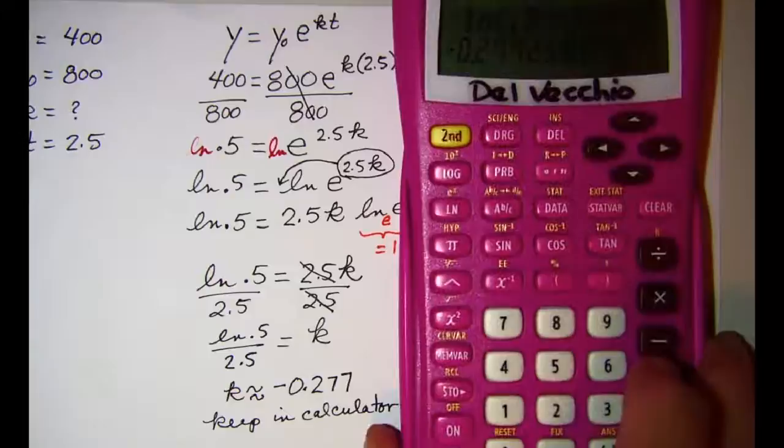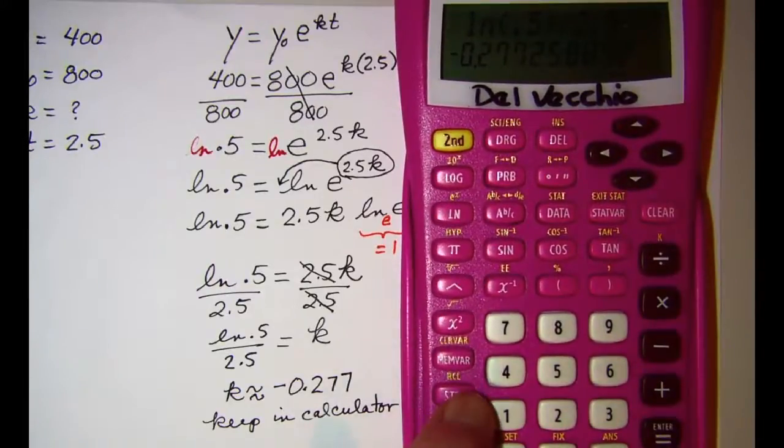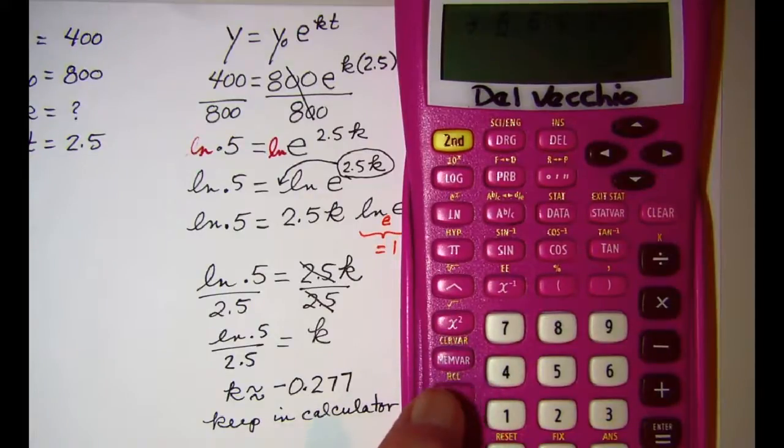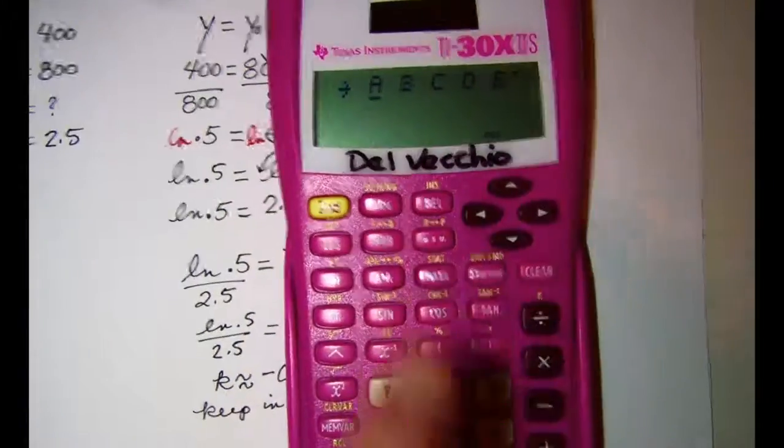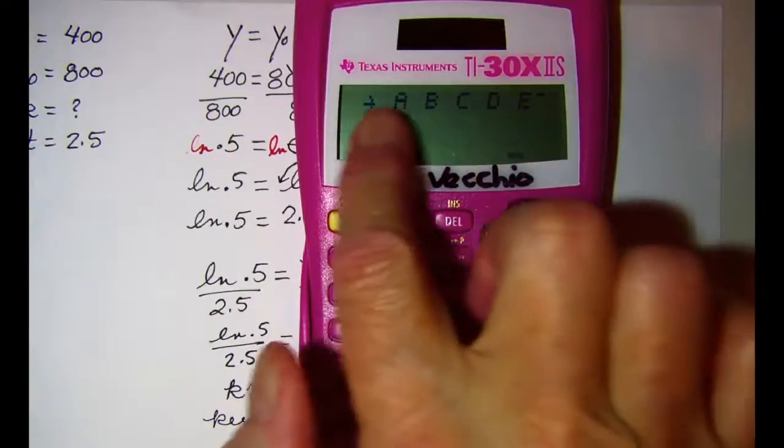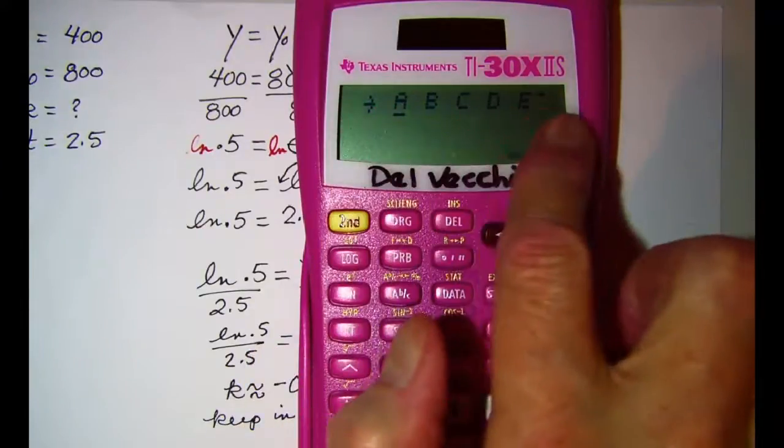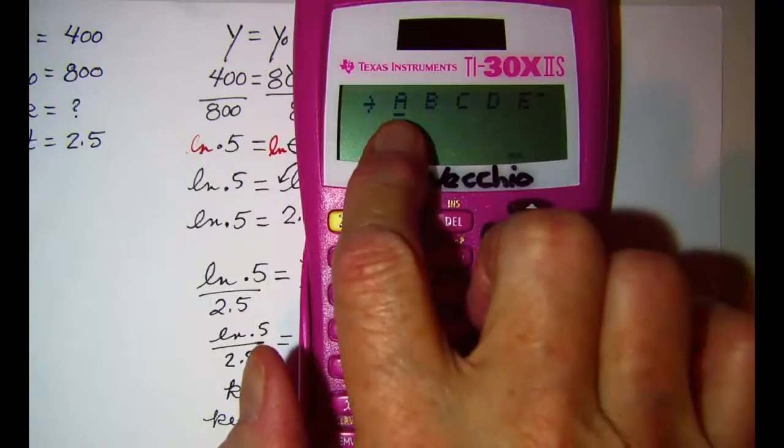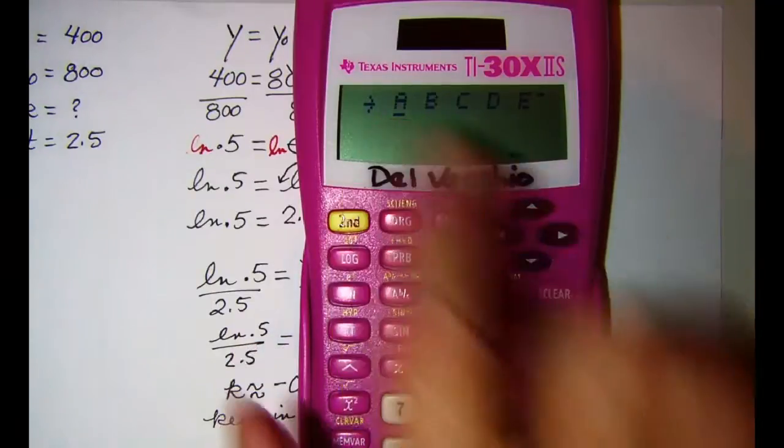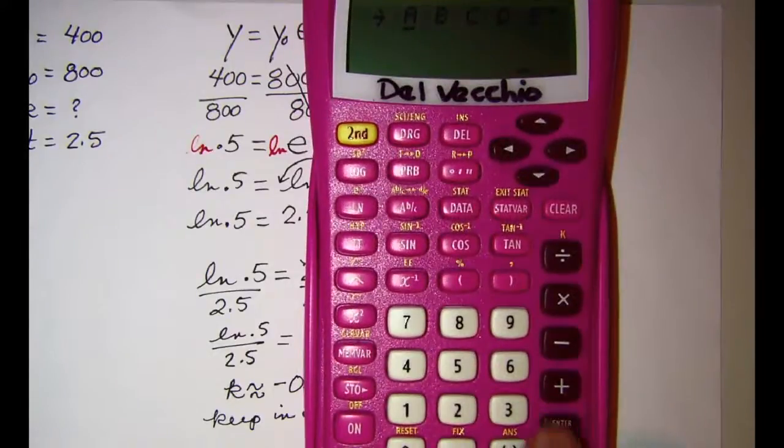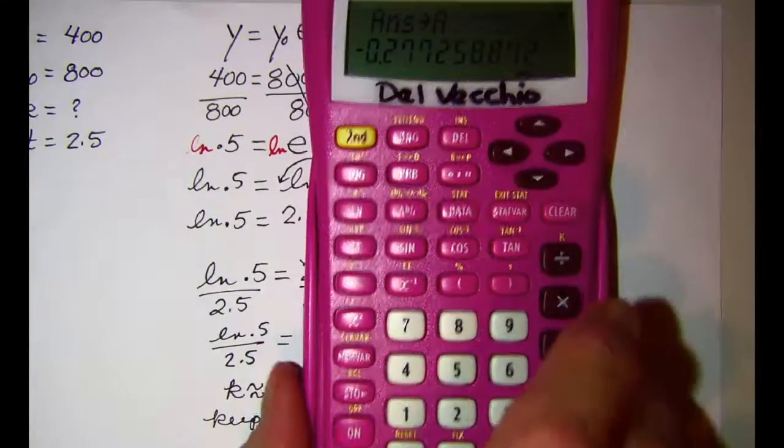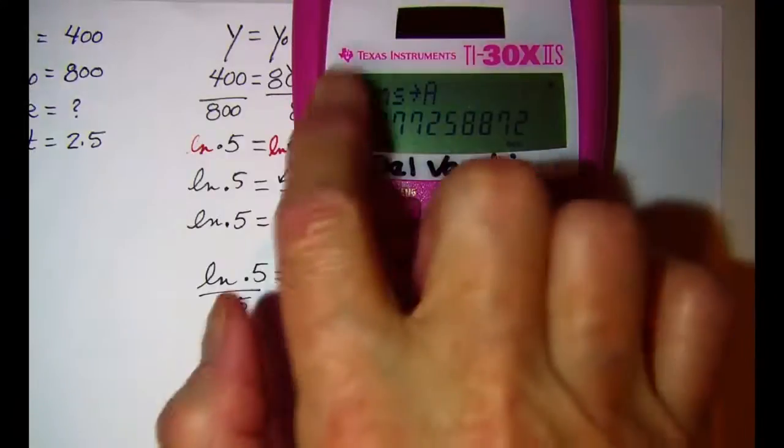Let me move my calculator up a little bit here. We're going to use store. That's this button right here. And we're going to hit store. And when we do that the calculator brings up the different memory places where we can store it. My A is underlined so to choose memory A I'll just press the enter and then our display shows that this answer went into memory A.